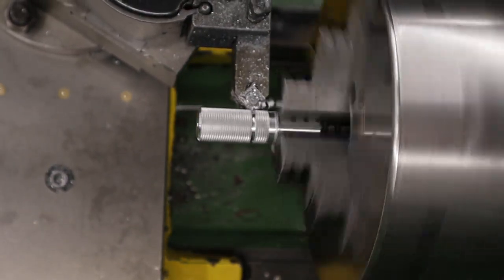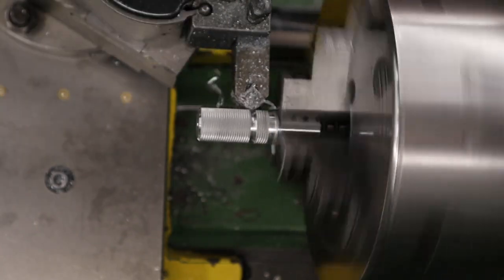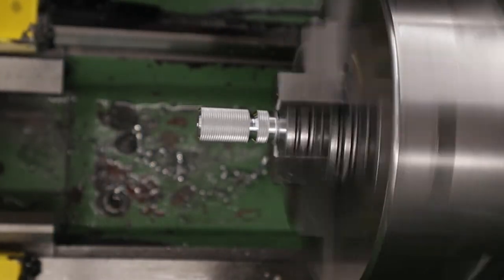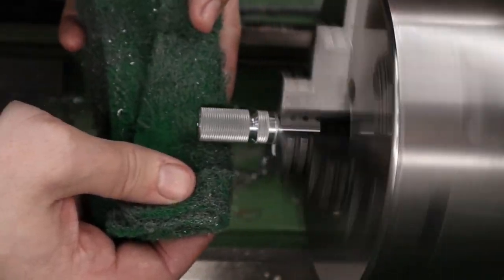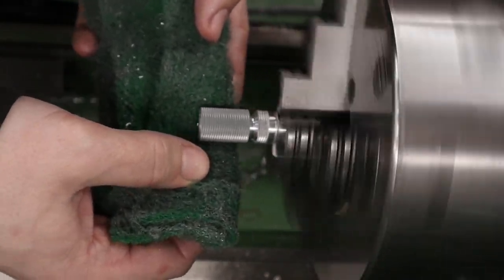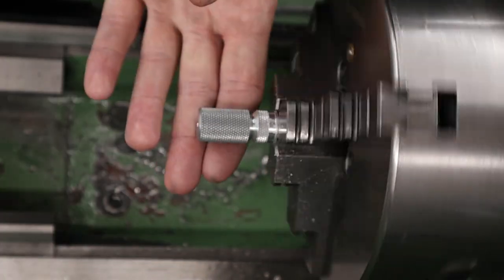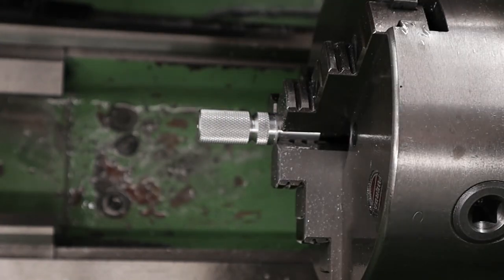This particular tool is 16mm in width so what we do is we touch one end on the face of the work, feed in 8mm which is half of the width of the tool, zero out the DRO and we know exactly where the tool is in relation to the work. This means that we'll have the same size chamfer on both sides of the trigger shoe.